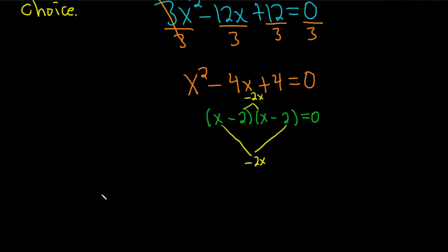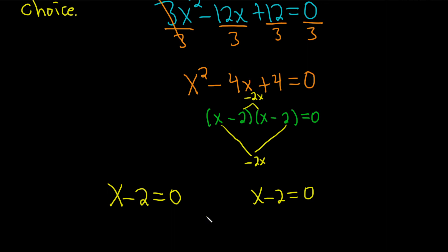You have a product equal to 0, so you set each factor equal to 0. So x minus 2 equals 0 and x minus 2 equals 0. In both cases you just get x equals 2, and that's the answer. This is called a repeated real root because we get the same answer twice, so it's just one answer but it's repeated.